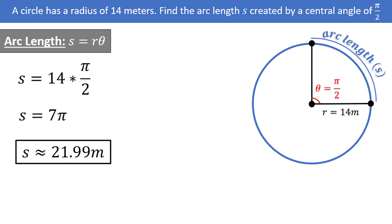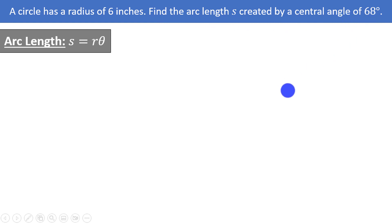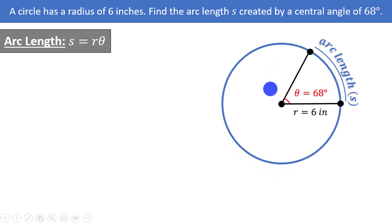Let's try another problem. We have a circle with a radius of 6 inches and we want to find the arc length created by a central angle of 68 degrees. Here's the picture: we have a radius of 6 inches and a central angle of 68 degrees.